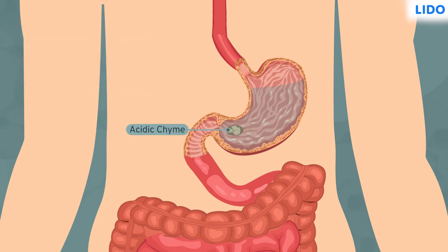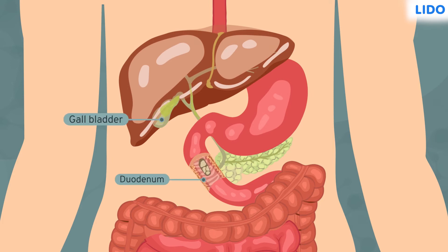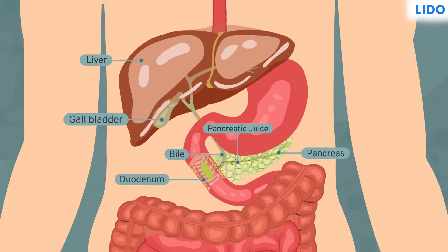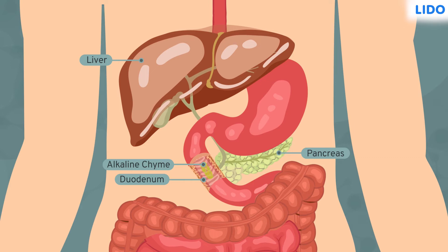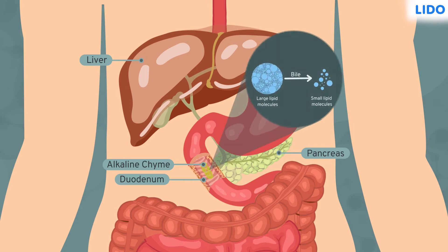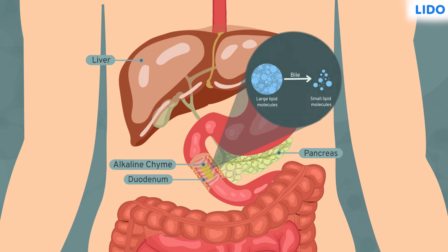As the acidic chyme passes from the stomach to the small intestine, secretions from the liver and pancreas called bile and pancreatic juices respectively are mixed with the food. Bile makes the chyme alkaline and breaks the large structure of lipids to small droplets of lipids.